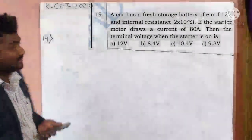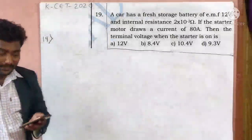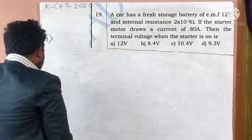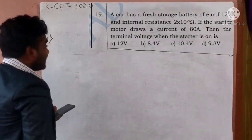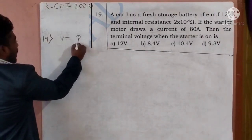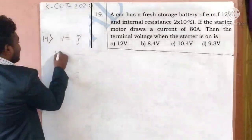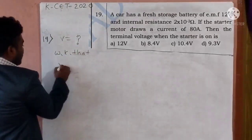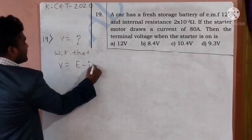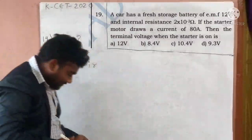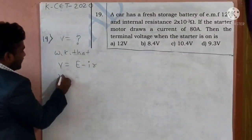19th question. In calculation I should calculate what - terminal voltage V is equal to how much. Current electricity we know that V is equal to E minus I into R.